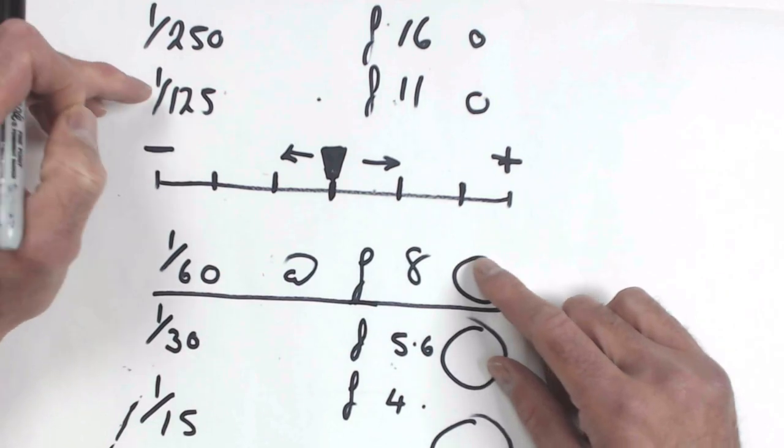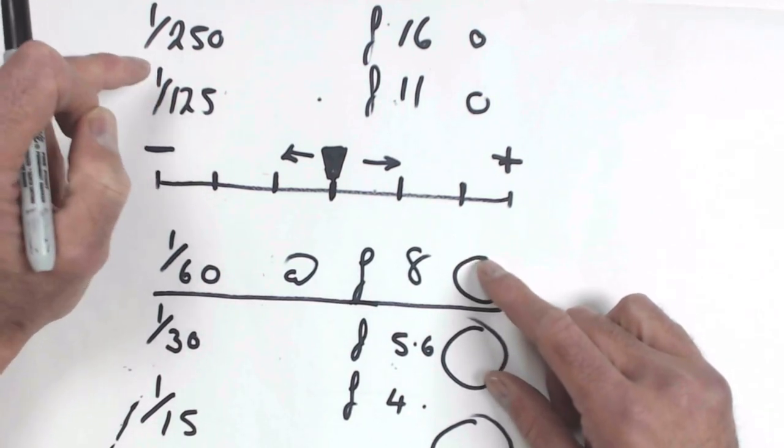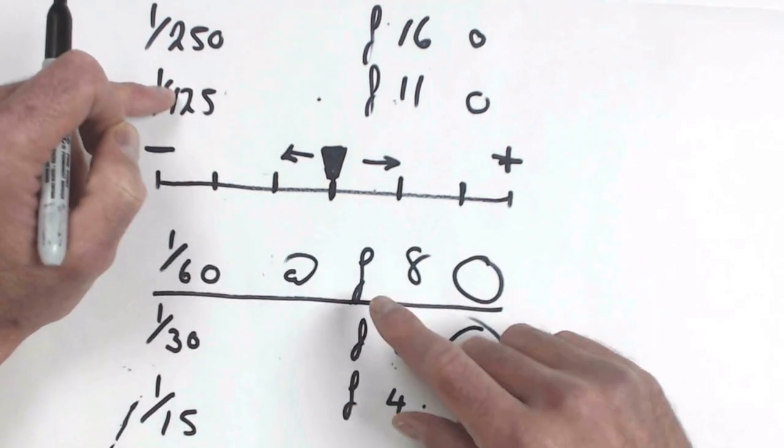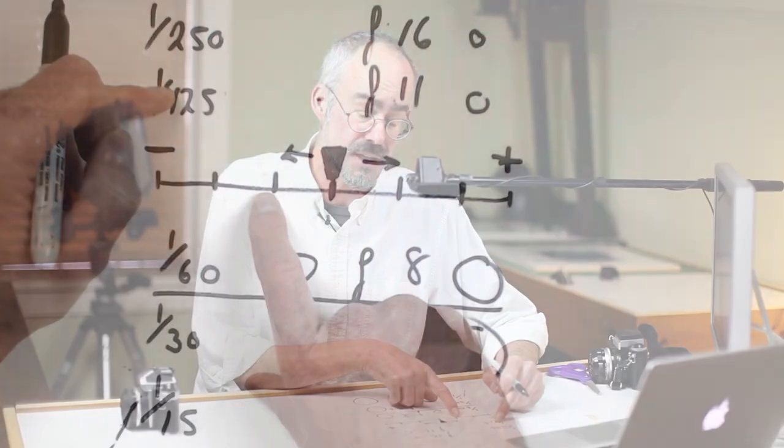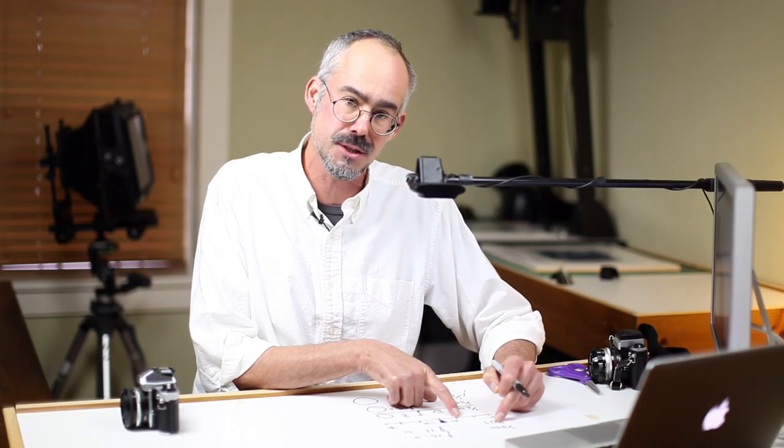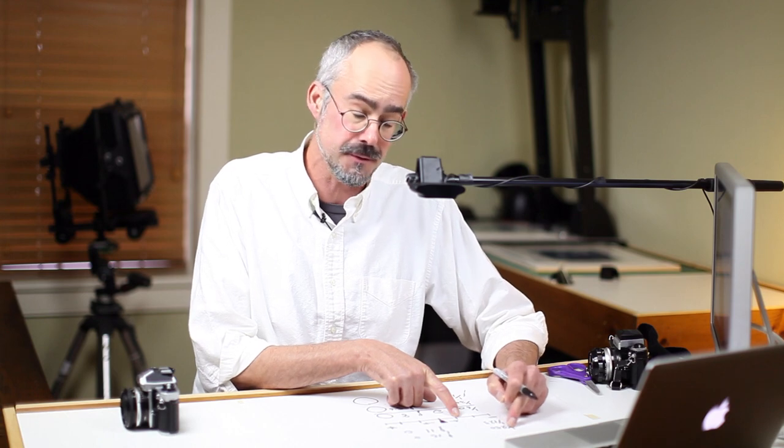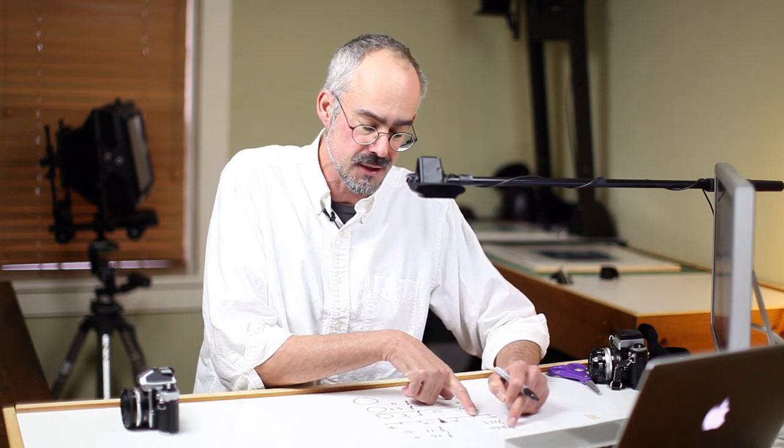Conversely, if we go from a sixtieth to a hundred and twenty fifth of a second, we are underexposing. There is half as much light getting through the shutter. And to two hundred and fifty of a second, it's half as much light again.